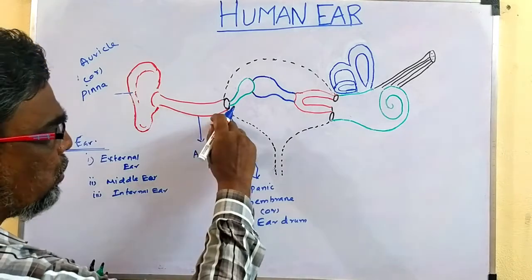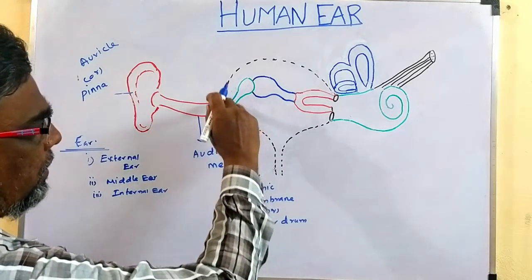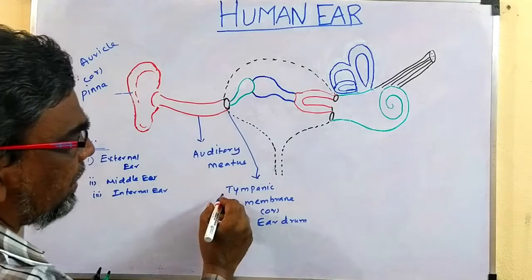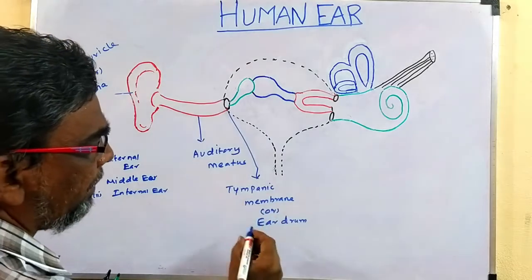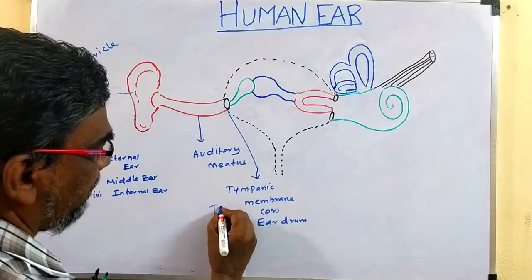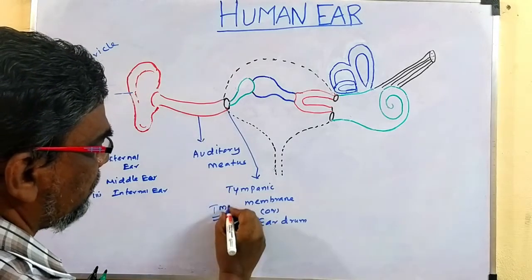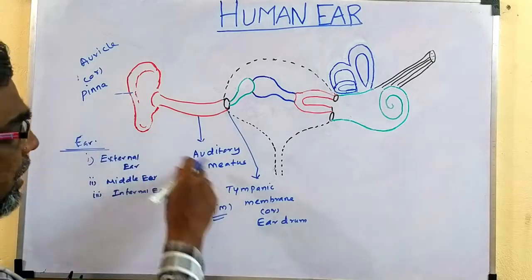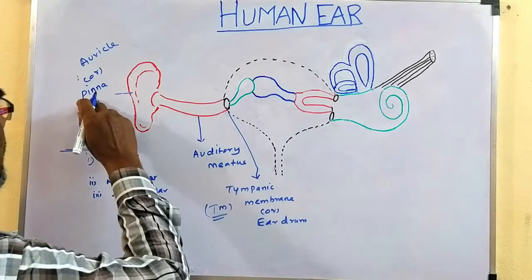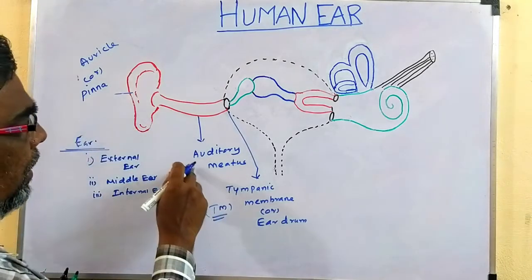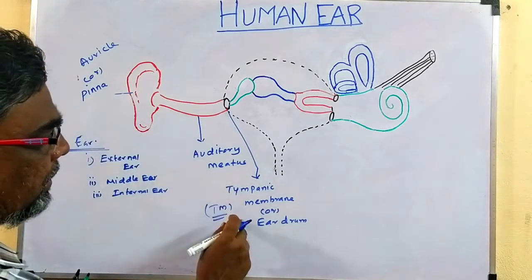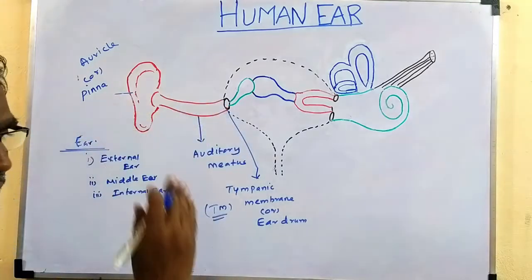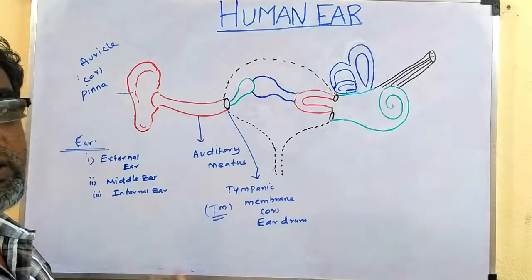Very next to the auditory tube, there is a membrane called the tympanic membrane, or ear drum — simply called TM. Pinna, auditory meatus, and tympanic membrane are the three parts that come under the external ear.